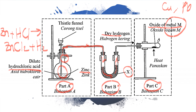The dry hydrogen gas then flows to the combustion tube in Part C, which is the main part of this experiment to determine the empirical formula. The combustion tube has a hole at the end. For a few minutes, let the hydrogen gas flow into the combustion tube, then collect a sample to check whether there is air inside.